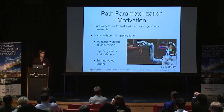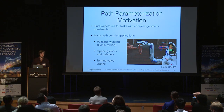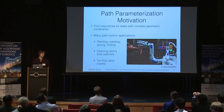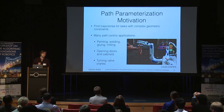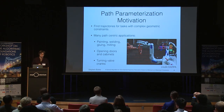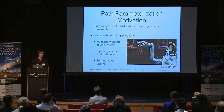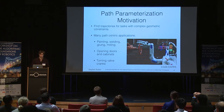Oftentimes we have a path because we have some complex geometric constraints. There are many path-centric applications like painting, welding, milling, opening and closing doors, and turning valve cranks. In these instances, to keep the problem tractable, we often perform geometric path planning first with respect to kinematic constraints, and then afterwards generate a trajectory with respect to the dynamics.